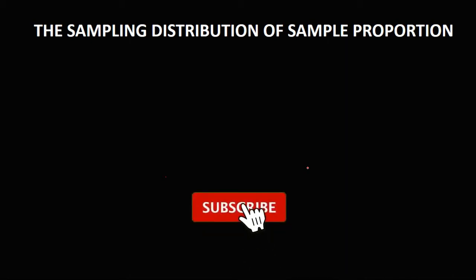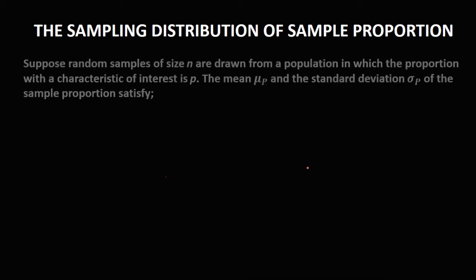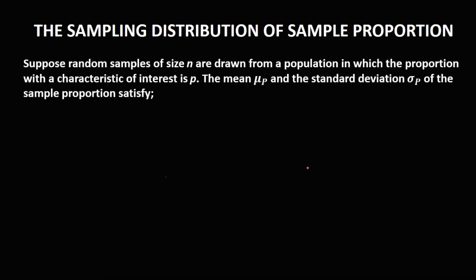Let's have this topic: the sampling distribution of sample proportion. Suppose a random sample of size N is drawn from a population in which the proportion with a characteristic of interest is P. The mean and the standard deviation of the sample proportion satisfy the following.